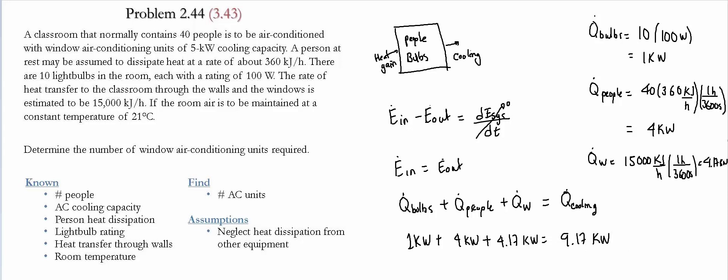The goal is to determine the number of window air conditioning units required to maintain the temperature at 21 Celsius. We need to remove 9.17 kilowatts of energy from the classroom. One unit is not sufficient since each only has 5 kilowatts of cooling capacity. Numerically, we need 9.17 divided by 5 equals 1.83 units. Since we cannot have 1.83 units, we round up — we need 2 cooling units to maintain the temperature at the desired 21 Celsius.